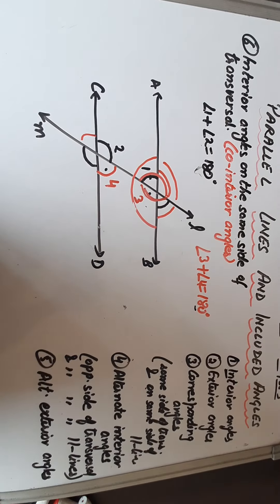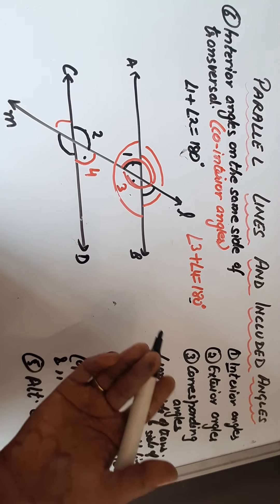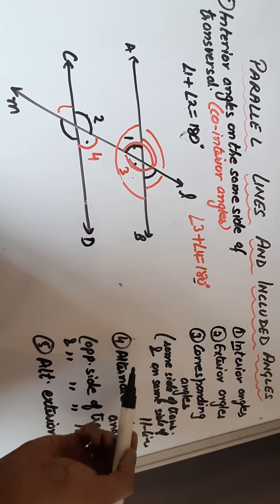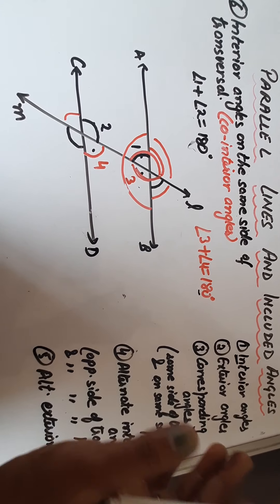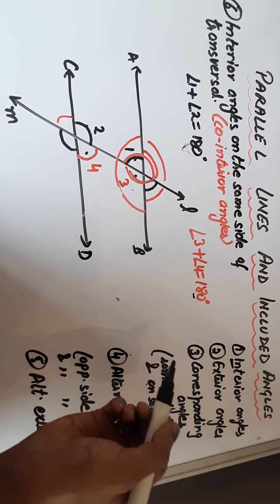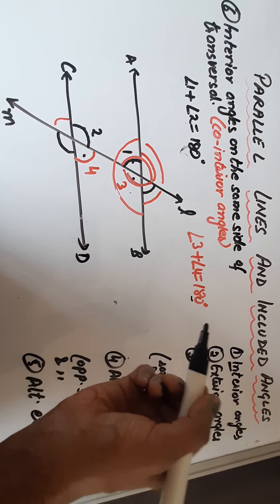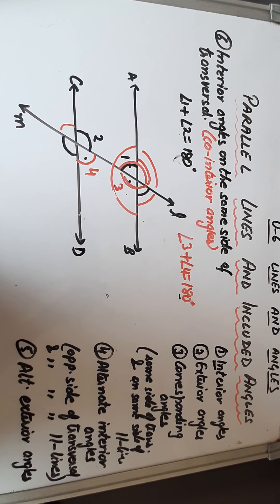Now, if lines are parallel, then corresponding angles are equal, alternate interior angles are equal, alternate exterior angles are equal, and co-interior angles sum to 180 degrees. Conversely, if corresponding angles between any two lines are equal, the lines must be parallel. If alternate angles are equal, the lines must be parallel. If the sum of co-interior angles is 180 degrees, the lines are parallel. In the next video we will start Exercise 6.2 based on this concept, so please note all these things in your notebook. Thank you.